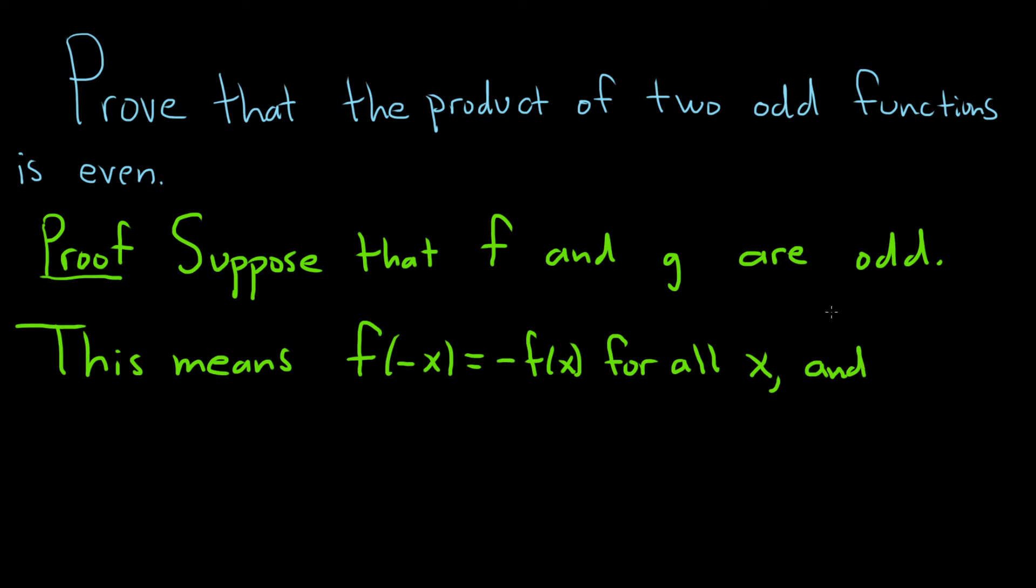And also, g is odd. So that means g of negative x is equal to minus g of x. And this also has to be true for all x.